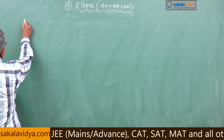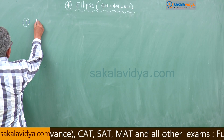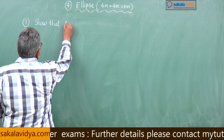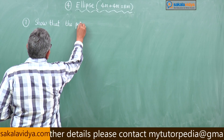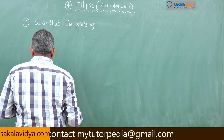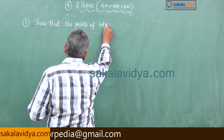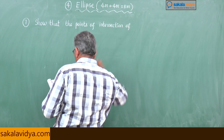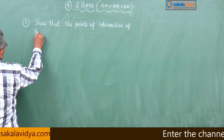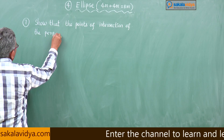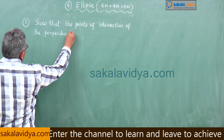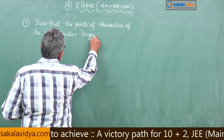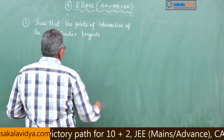Seventh question: Show that the points of intersection of perpendicular tangents to an ellipse lie on a circle.